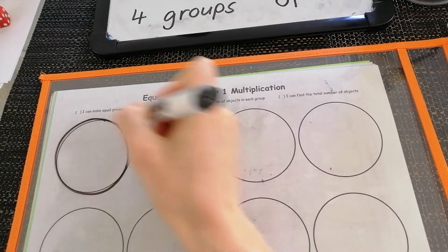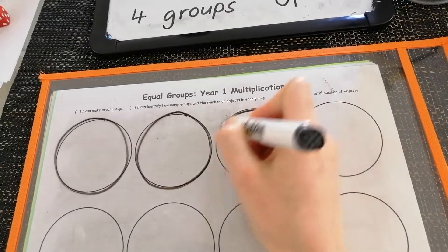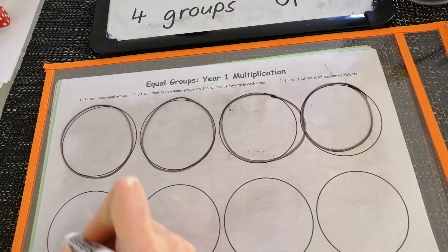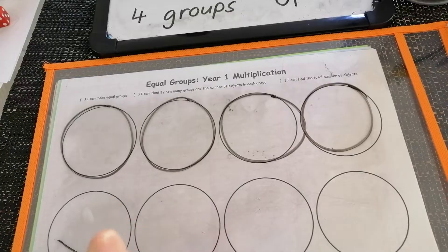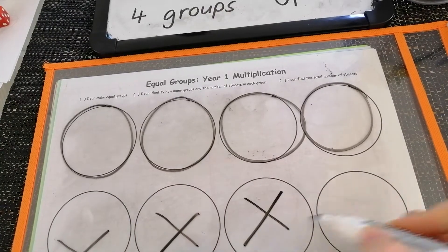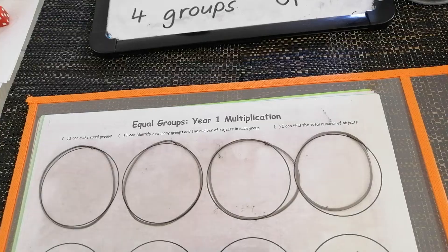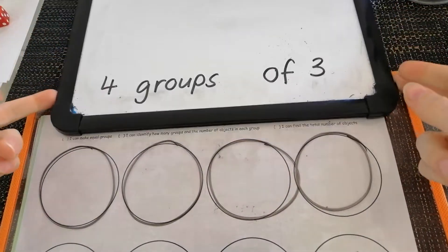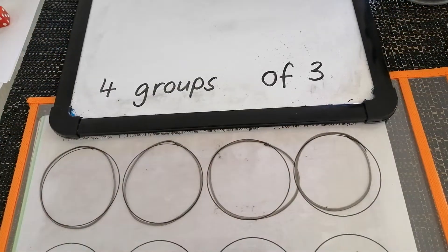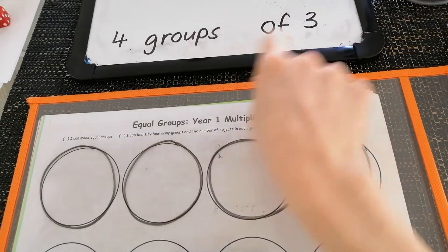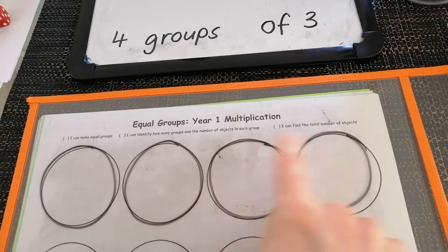One group, two group, three group, four group. And I'm actually going to cross out the ones that I do not need, because I don't want to get confused. Now I have my four groups ready. How many things do I need to put in each of those groups? I need to put three things in each of those four groups.